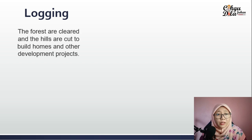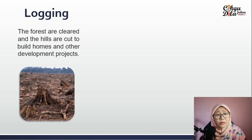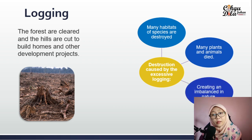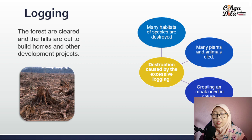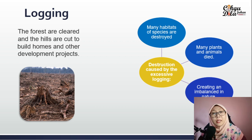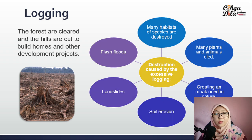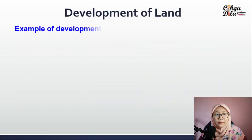Logging is when forests are cleared and hills are cut to build homes and other development projects. Destruction caused by excessive logging means many habitats of species are destroyed — they have no place to live, many plants and animals die, and it creates an imbalance in nature. The number of certain species may reduce too much or some species move to another place.